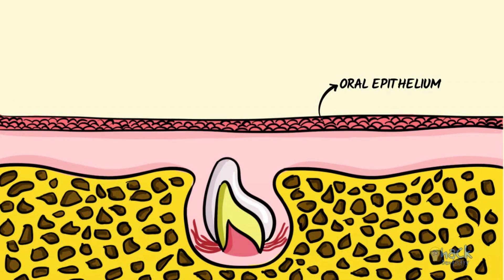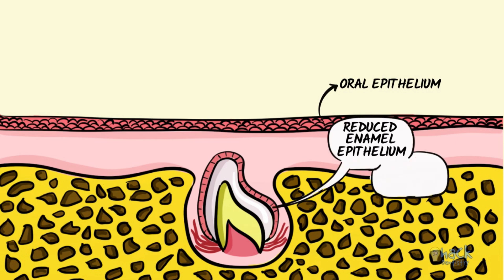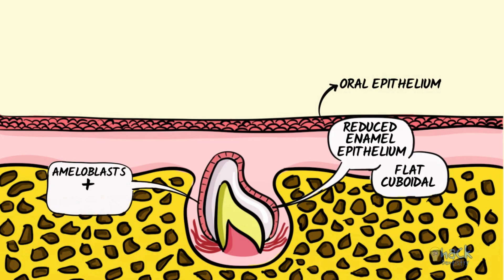Once the tooth crown is formed and ready for eruption, there is a thin membrane of cells wrapping the entire enamel surface of the tooth. This layer of cells, called the reduced enamel epithelium, is a layer of flat cuboidal cells and is formed by fusion of the ameloblast layer and the outer enamel epithelium.